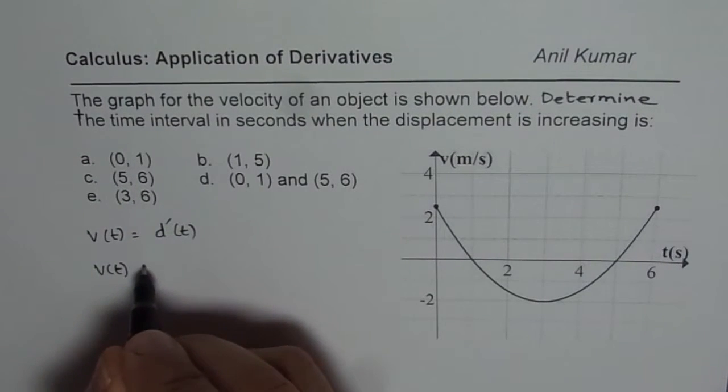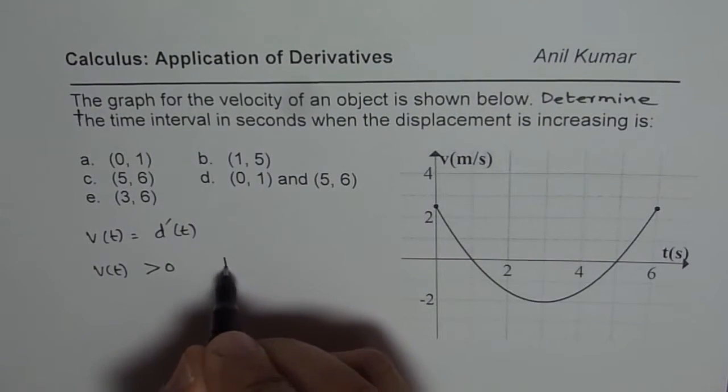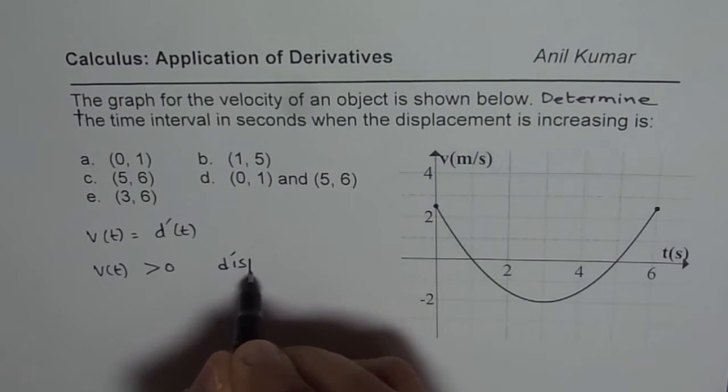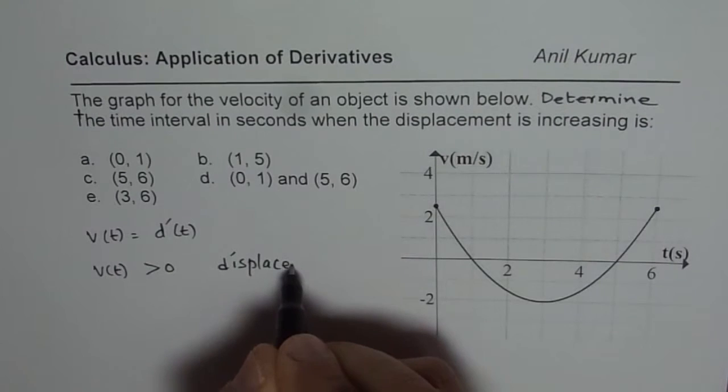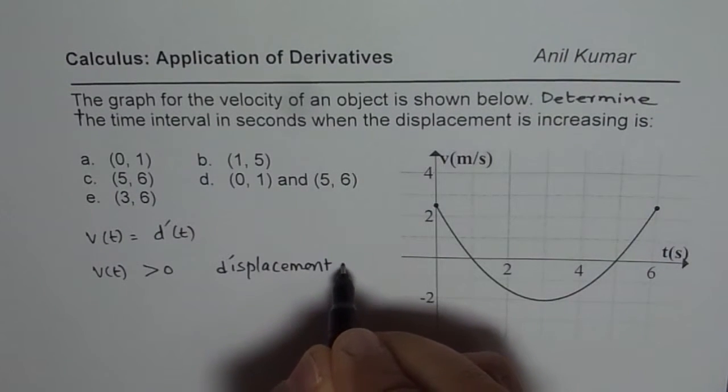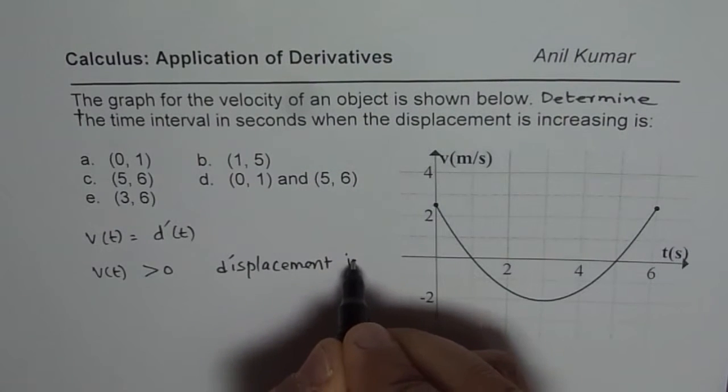So, whenever velocity is greater than zero, that means that displacement is increasing. So it is going up, right? It is increasing.